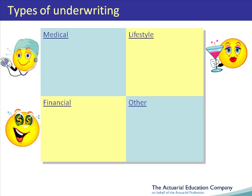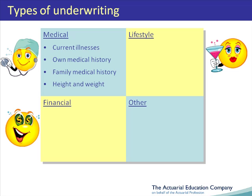Medical information may include current illnesses as well as past illnesses suffered by the individual. Family medical history may also be useful. The individual's level of health may also be reflected to some extent in his height and weight. Lifestyle information includes the smoking and drinking habits of the individual, his occupation, and any dangerous hobbies undertaken — for example motor racing.